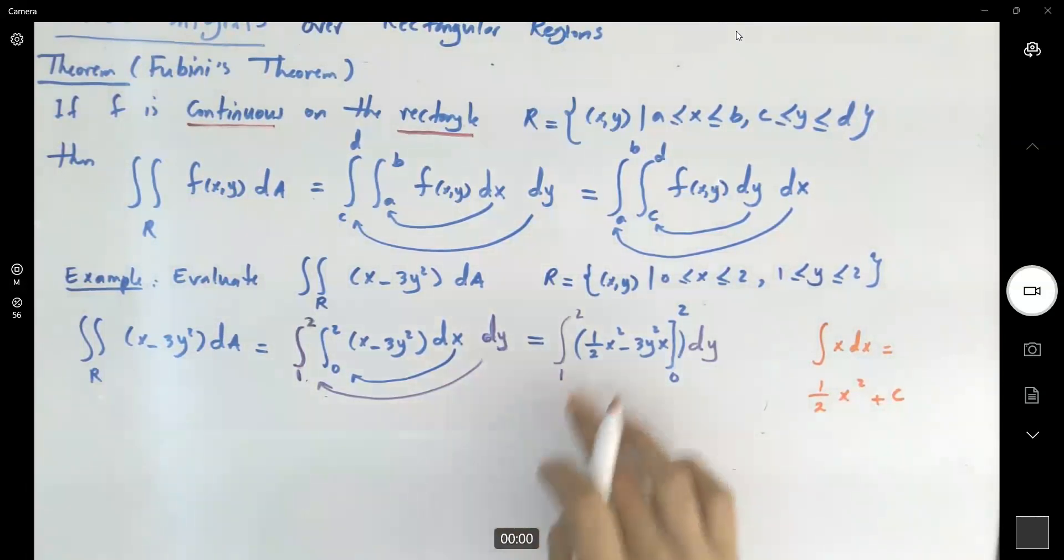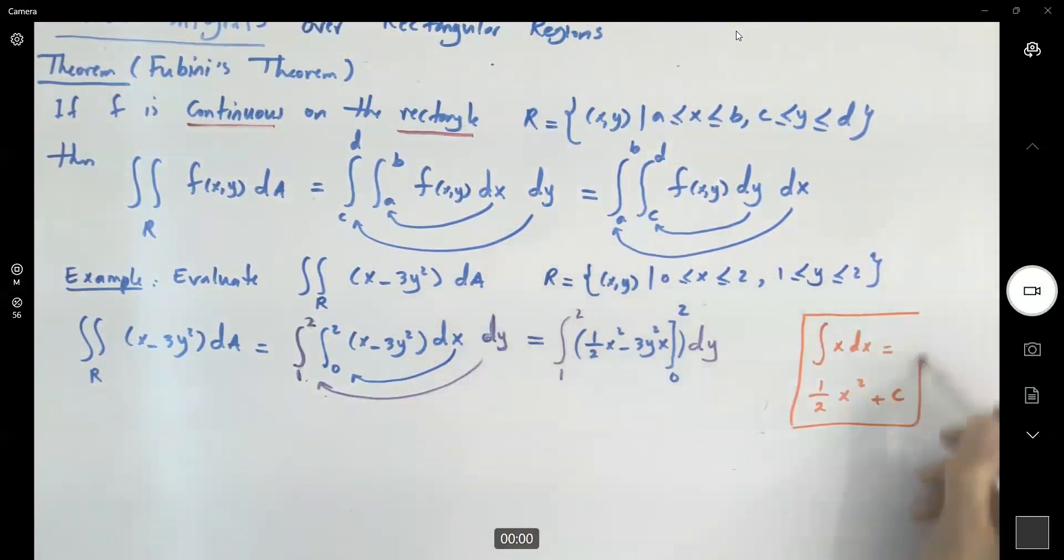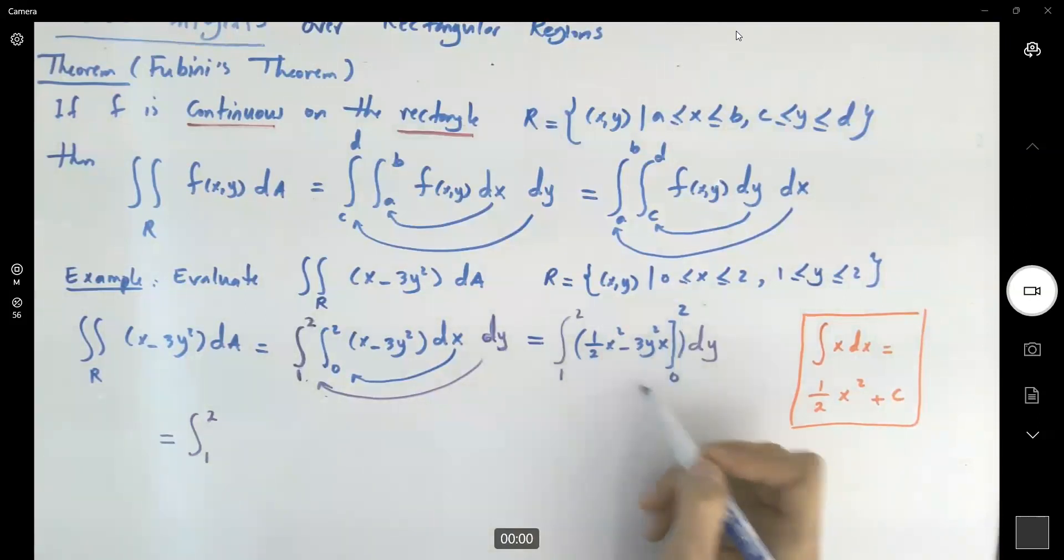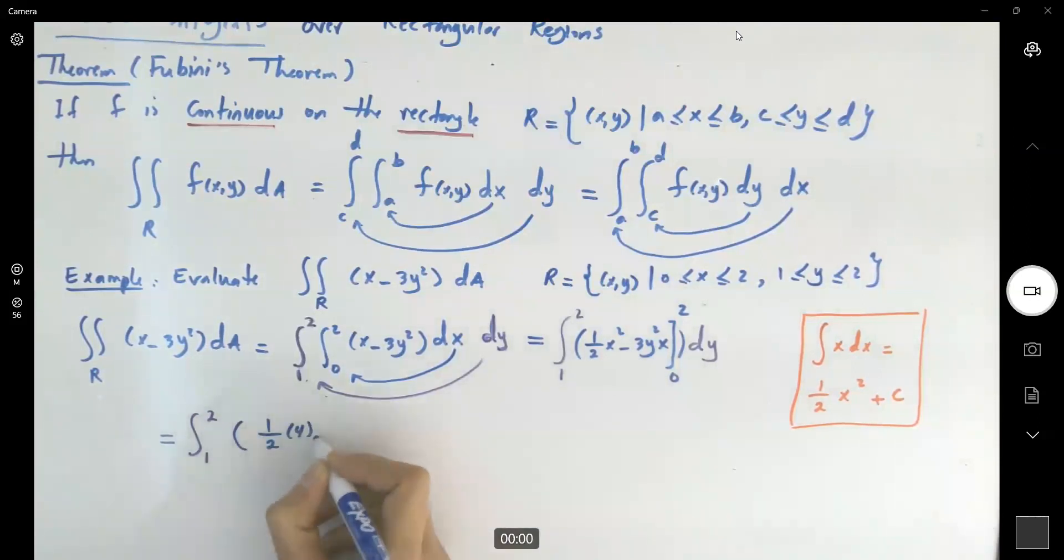Recall that the integral of x dx is a half x² plus constant integration, but we're not really worried. Here we're calculating the definite integral. This is equal to integral 1 to 2. Now, let us plug in 2. Then we plug in 0. 0 doesn't actually change anything, because it's going to be 0. We're going to have a half times 4 minus 3 times 2y² minus the 0, and the dy.